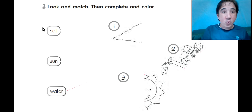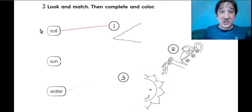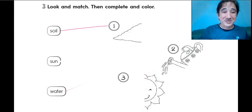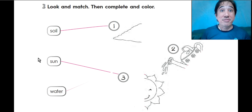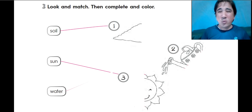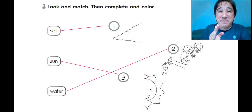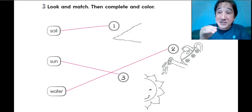The word soil goes to picture number one. The word sun — here's the sun — is picture number three. And the word water, of course, goes to number two. But then you have to complete the drawing.